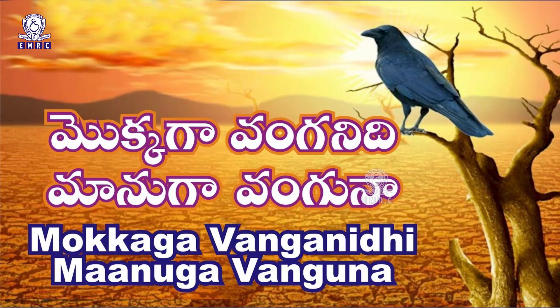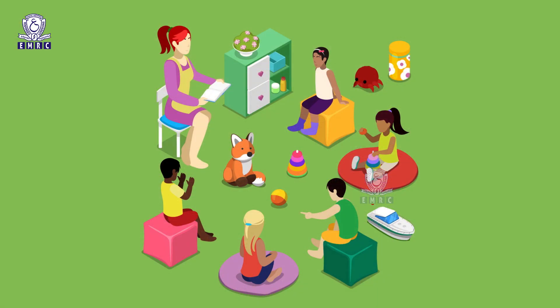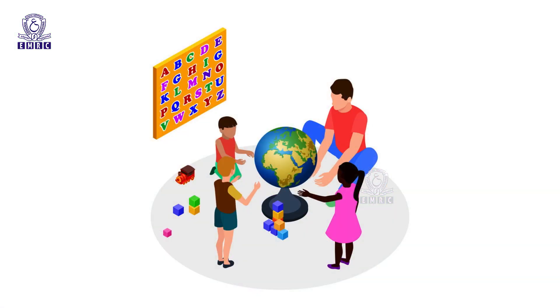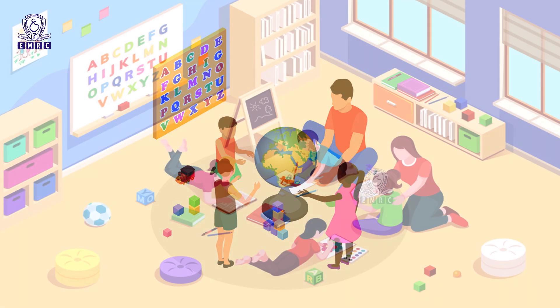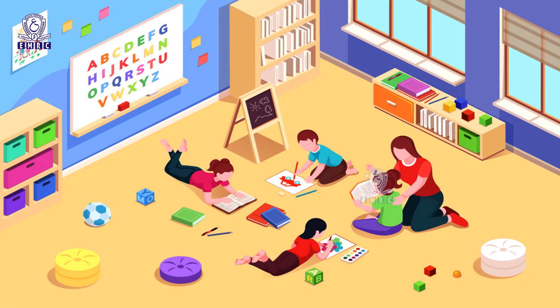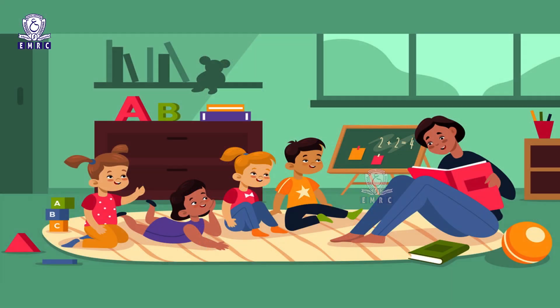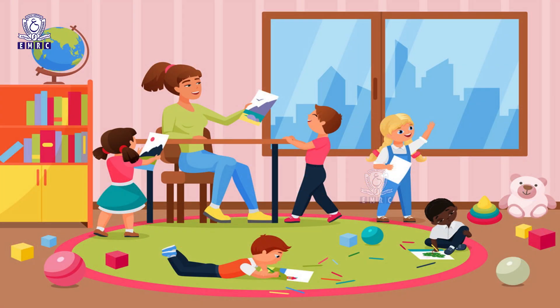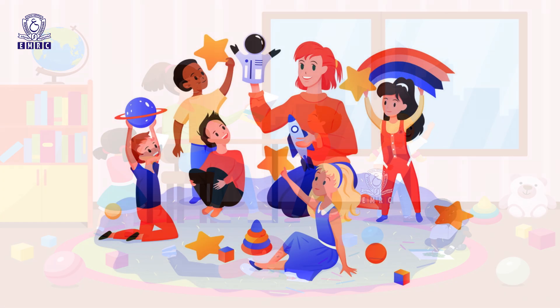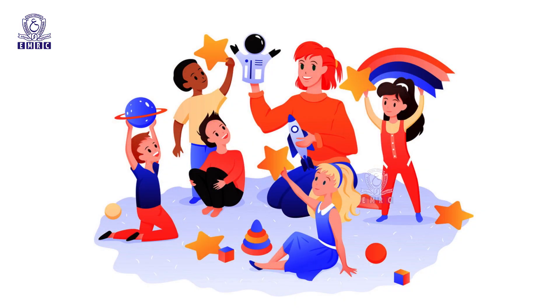Likewise, goes this saying: it is easier to build a sapling than a tree. In Telugu, it means 'Mokkai Vanganidi, Manai Vanguna.' Teaching a child at an early age and correcting them is very important. Childhood becomes a very important period in one's life. Psychologists say that the first five years of a child are very important — it is more like a blueprint of their life. What a child learns, what a child observes, and what a child hears is the same thing he will do as an adult.